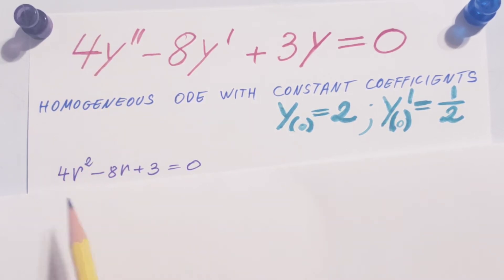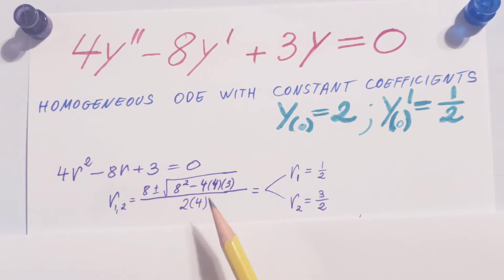4r squared minus 8r plus 3 equals 0. Make sure you don't accidentally put another r here just because there's a y there, okay? Now, we're going to solve this simple quadratic equation. We can find our two roots, 1/2 and 3/2.